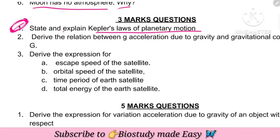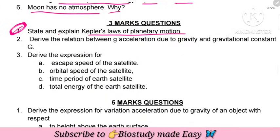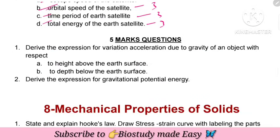Three-mark question: state and explain Kepler's laws of planetary motion — very very important and repeatedly asked. Derive the relation between acceleration due to gravity and gravitational constant G. Derive the expression for escape speed of a satellite, orbital speed of satellite, time period of satellite, total energy of satellite.